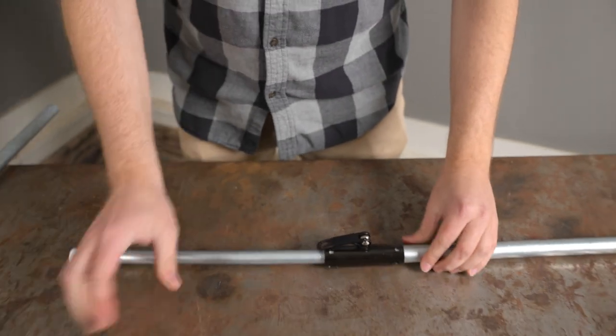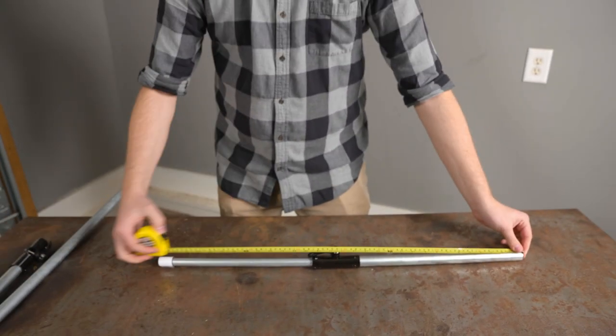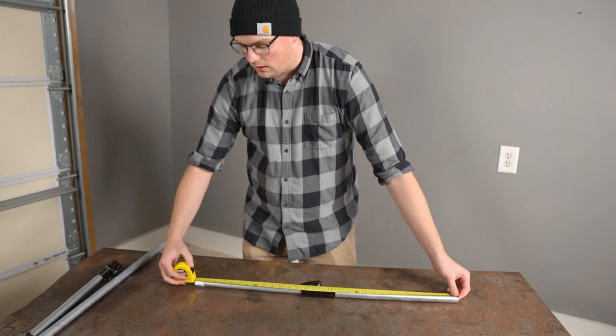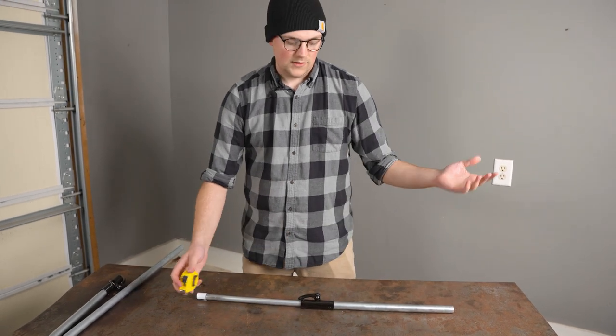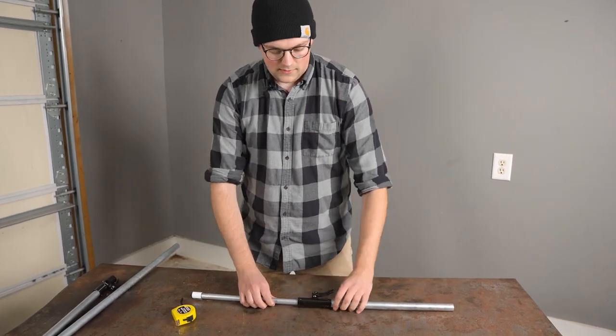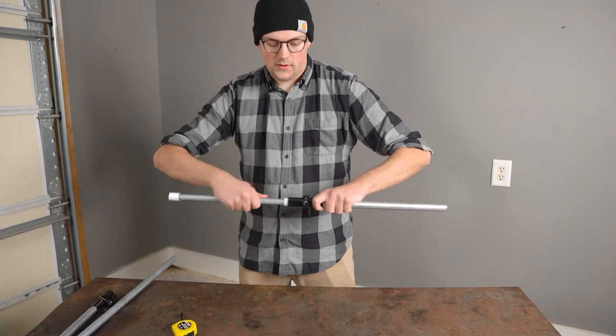Now we just took that 40-inch leg and turned it into a 32-inch leg, just like that, super easily. That's a pretty cool way to do a telescoping clamp.